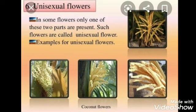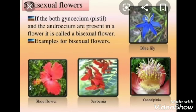Bisexual flowers: some flowers are bisexual — it means they have both reproductive parts, that is they have both stamen and pistil. Examples include china rose, morning glory, lily, rose, tulip, etc.